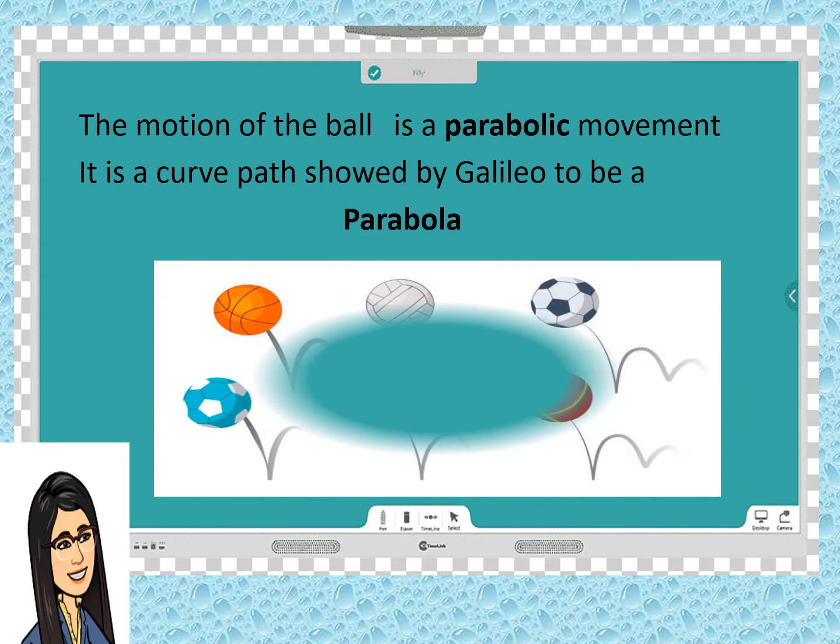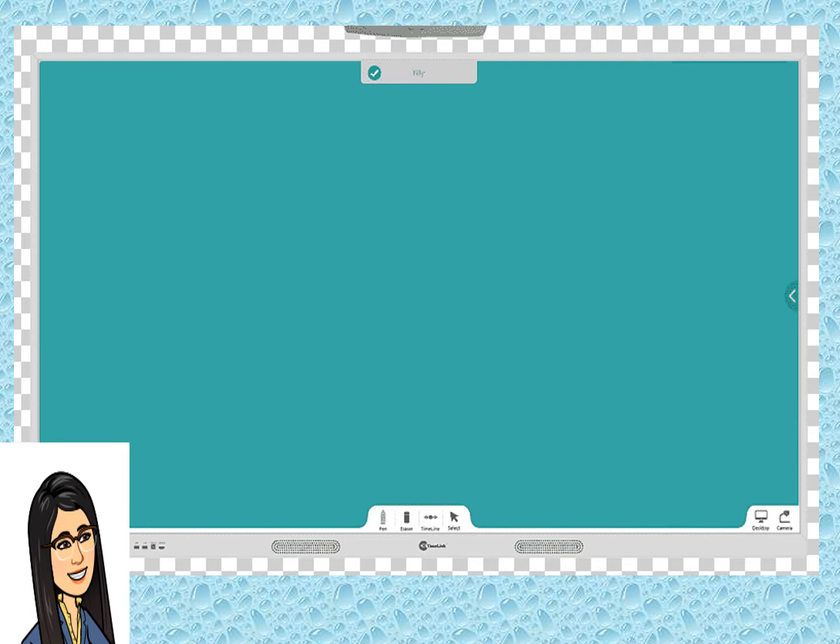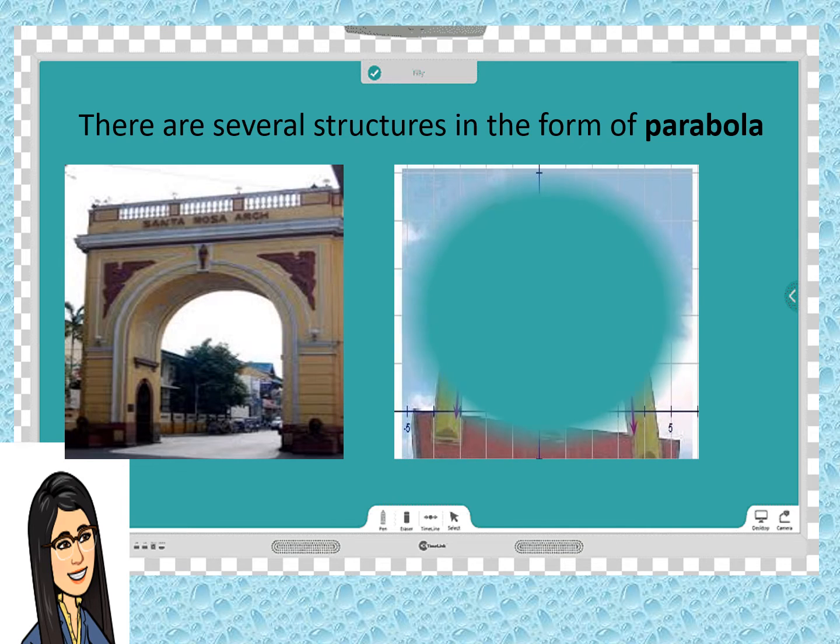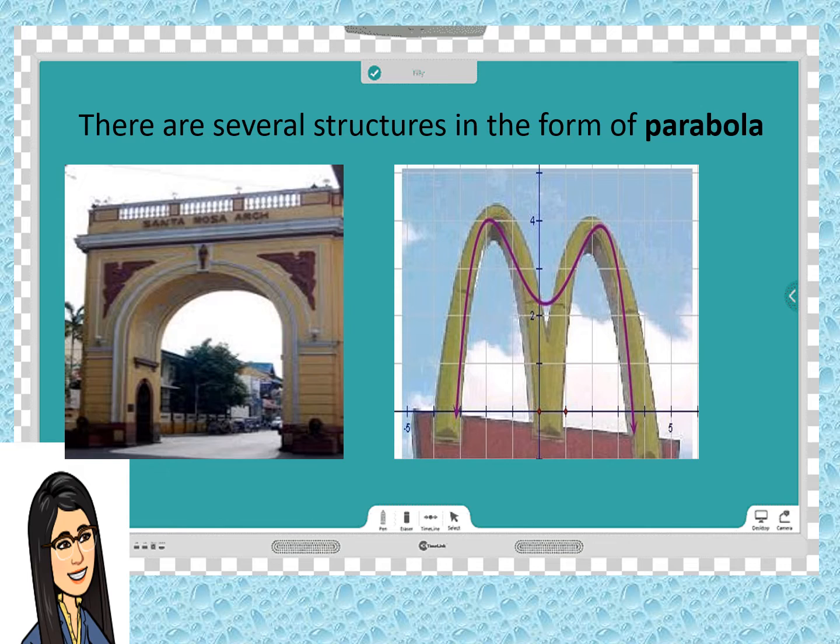Here are the illustrations of the bouncing balls. If we look in our surroundings, there are several structures in the form of parabola. Here are the two famous examples. The signage of the entrance of Santa Rosa. The all-time favorite, McDo, where it's symboled as an example of figure of parabola. And there are lots of parabolic shapes in our environment.